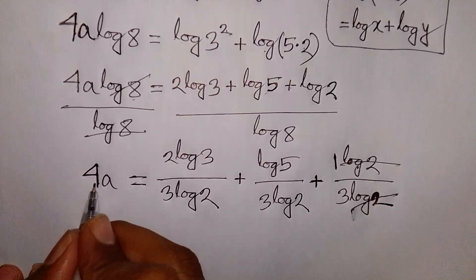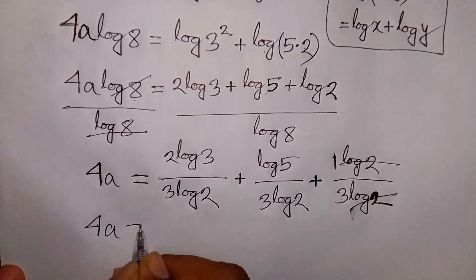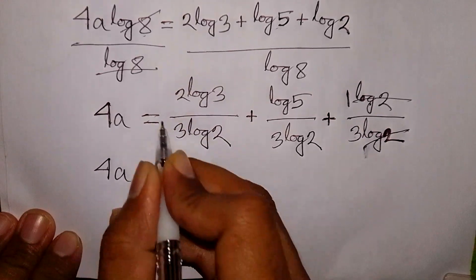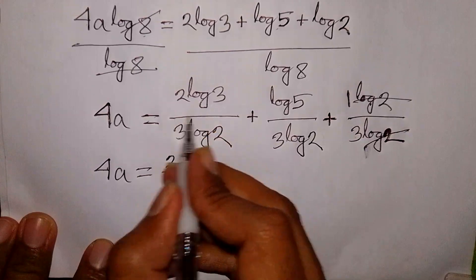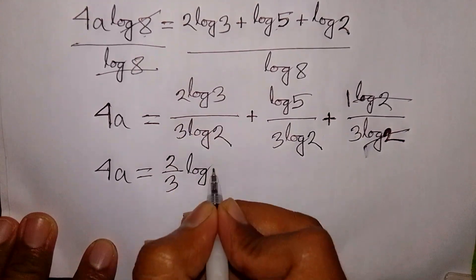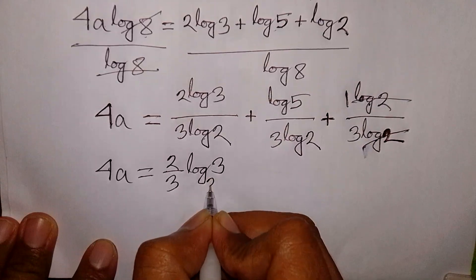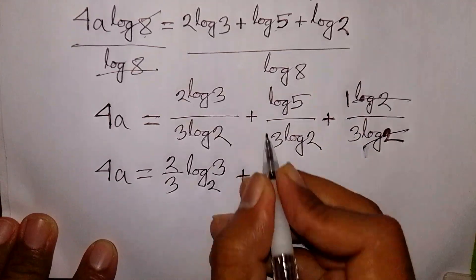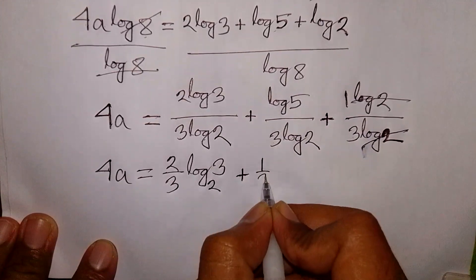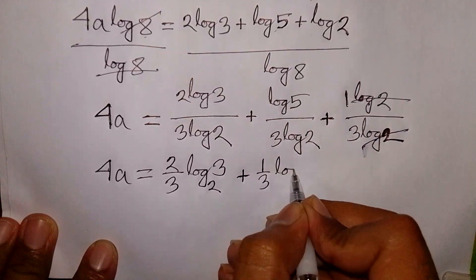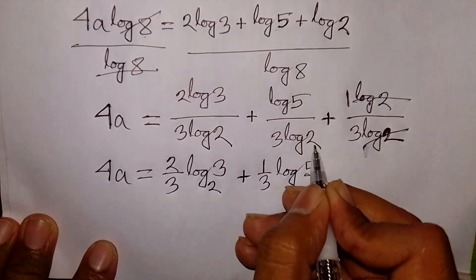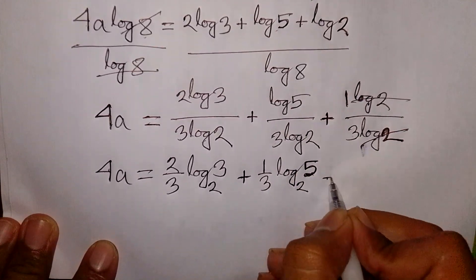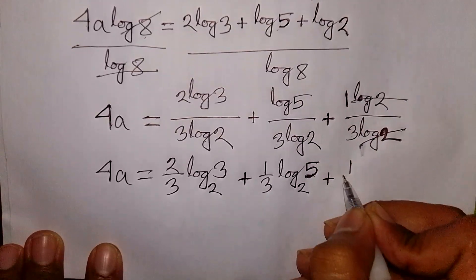Now we have 4A equal to 2 over 3, and log 3 over log 2 is the same as log base 2 of 3. Then 1 over 3, and log 5 over log 2 is the same as log base 2 of 5. Then plus 1 over 3.